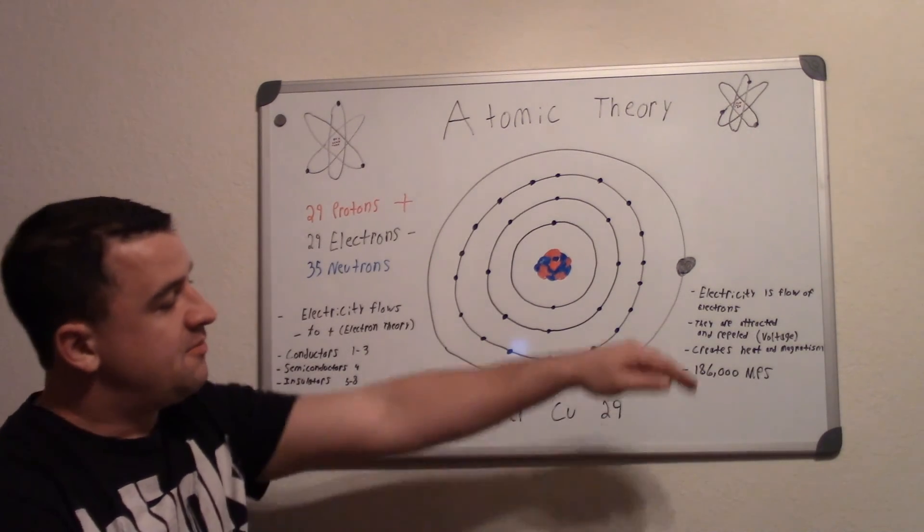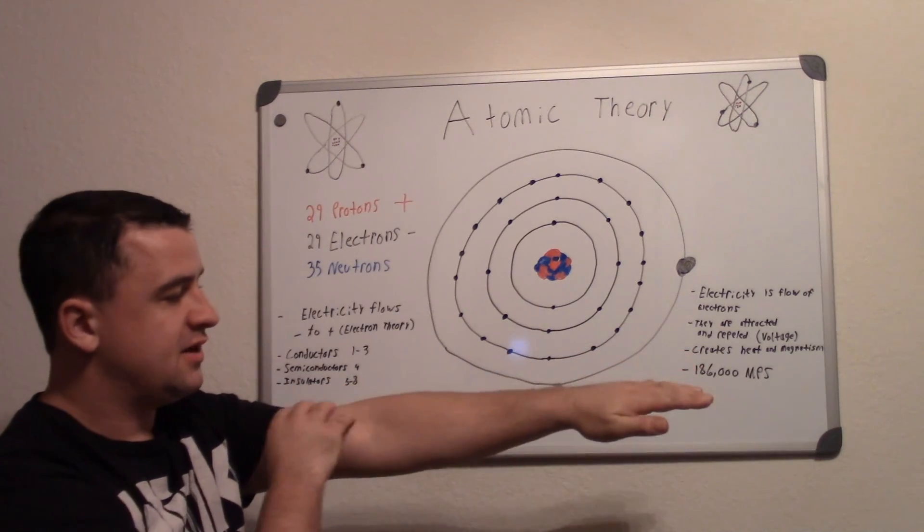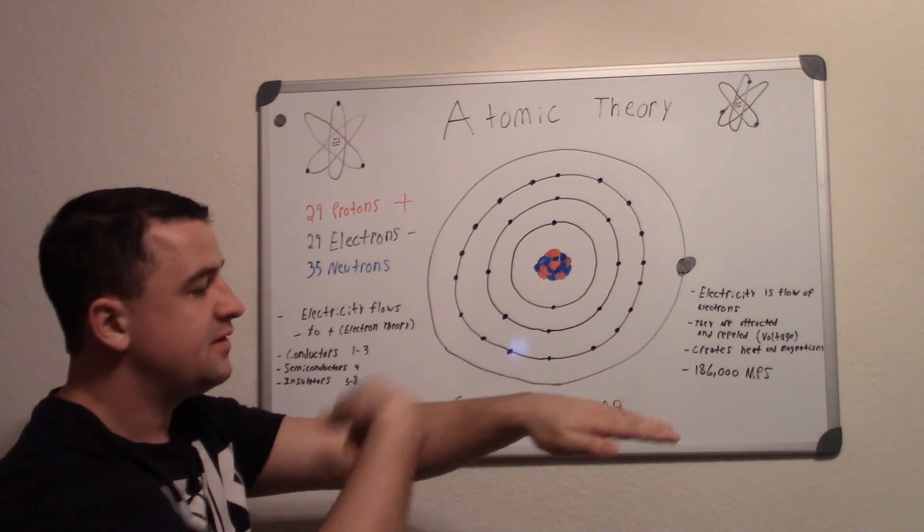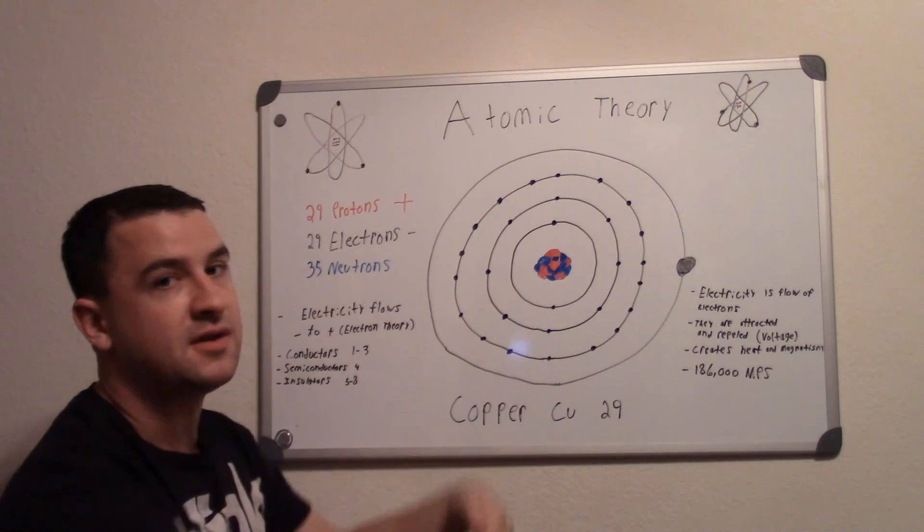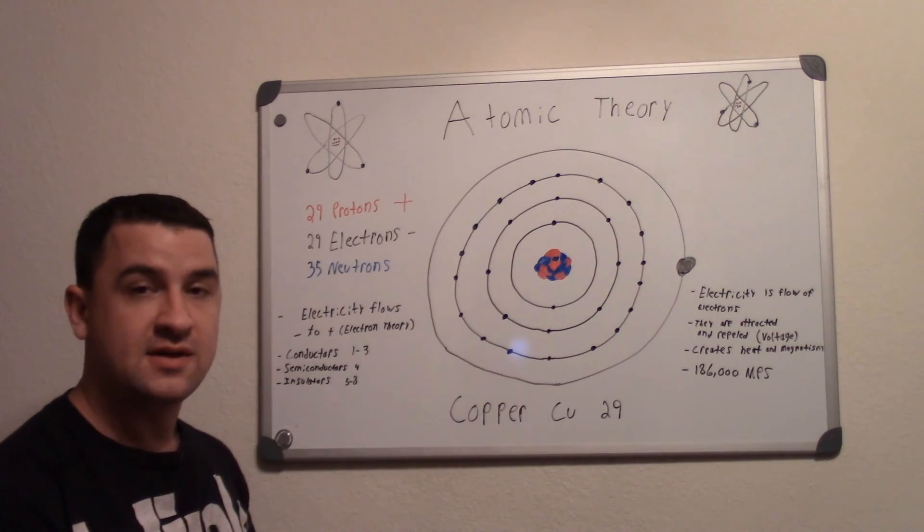So let's say for example my arm is a wire and electricity is flowing through it. It creates a magnetic field around it. And that's what we use a lot of times in motors.